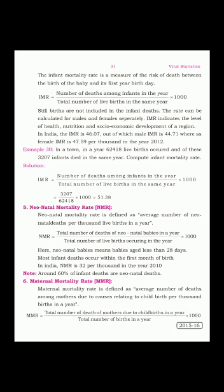The next death rate is Maternal Mortality Rate. The word maternal refers to mother. This death rate exclusively tells about those mothers who die during the process of childbirth. MMR is defined as the average number of deaths among mothers due to causes relating to childbirth per 1,000 births in a year. MMR equals total number of deaths of mothers due to childbirth in a year divided by total number of births in a year, into 1,000.